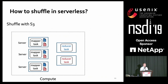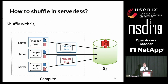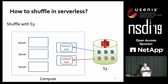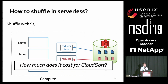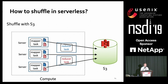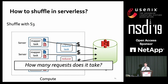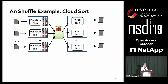If we shuffle via S3, map tasks write all data into S3 before they exit, and later tasks read directly from S3. Since S3 charges a premium per request, the question is how many requests it takes to shuffle all the data. The total number of intermediate files equals the number of partition tasks multiplied by the number of merge tasks.